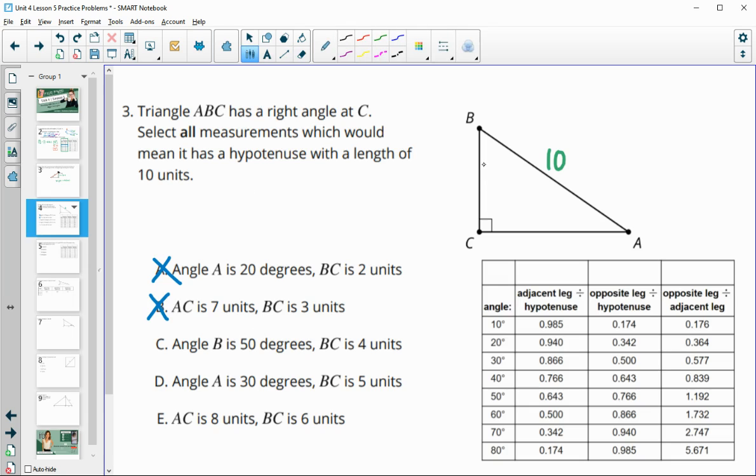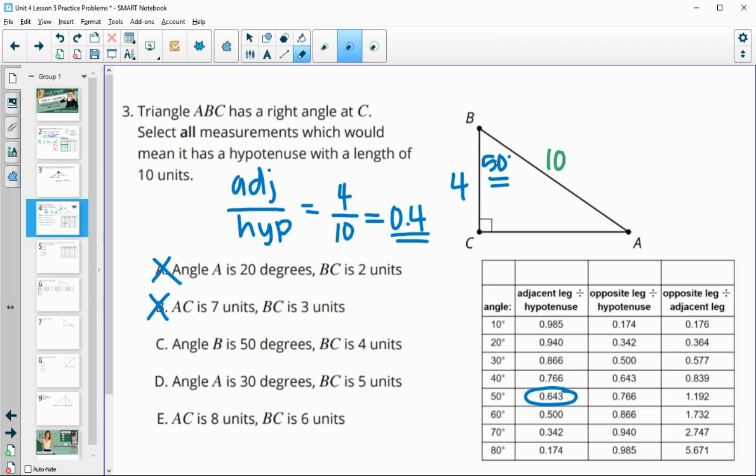Next one has what if angle B was 50 degrees and side BC was 4. So now in comparison to this angle, side BC is the adjacent side and then that 10 is still the hypotenuse. When I do the adjacent side of 4 divided by the hypotenuse of 10, that gives me a decimal of 0.4. Let's look at adjacent divided by hypotenuse for our 50-degree angle. Adjacent divided by hypotenuse for a 50-degree angle should be 0.643. We have 0.4, so those don't match.